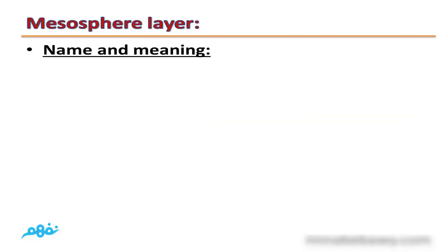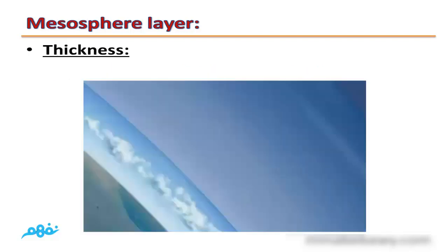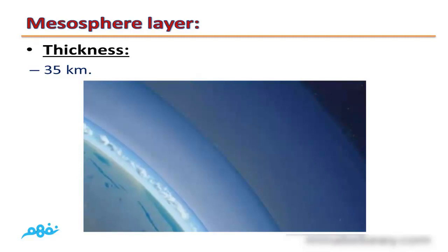The third layer is mesosphere. It is called mesosphere because it is the middle layer and also the coldest layer. The thickness of this layer is 35 km.